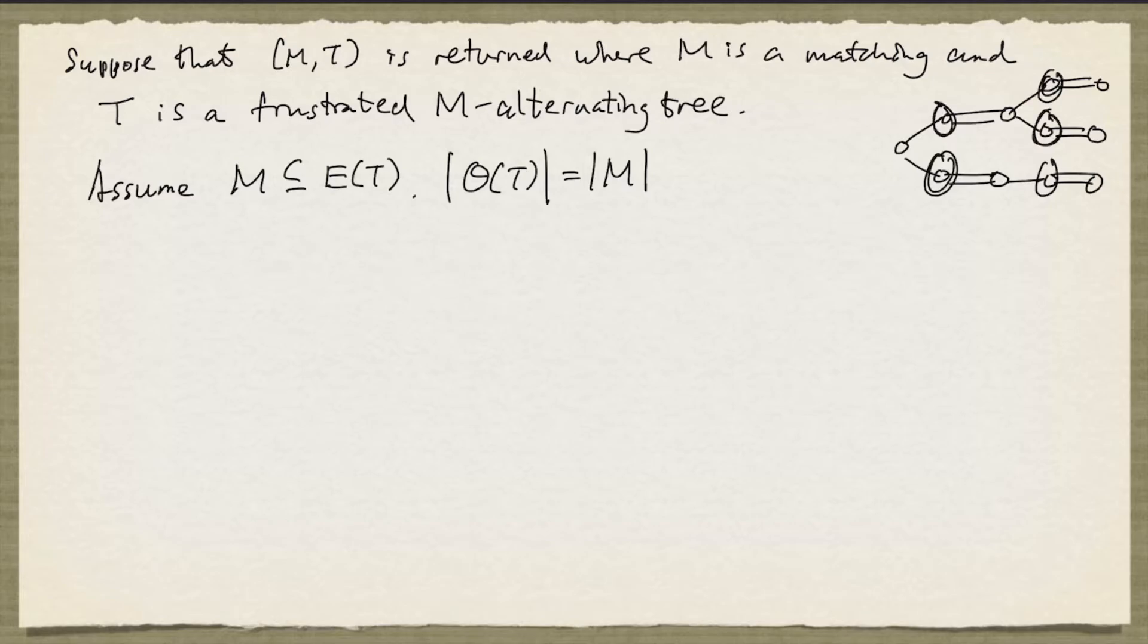These nodes that are circled are in the odd set. And remember that every time we add a matching edge to the tree, we add a node to the odd set. So this equality holds.